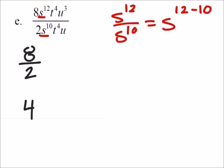the 10 s's in the denominator are going to cancel out 10 of the s's in the numerator. So that would end up being s to the power of 2. So right now we've got 4s to the power of 2.